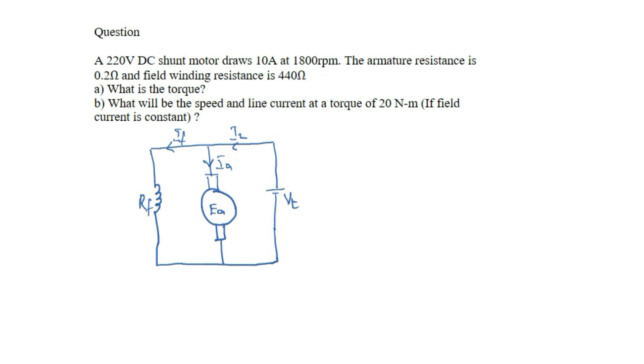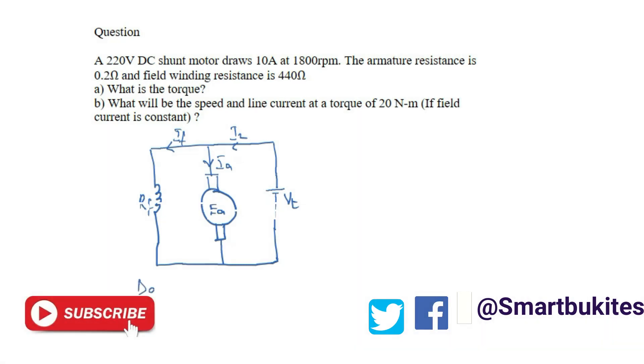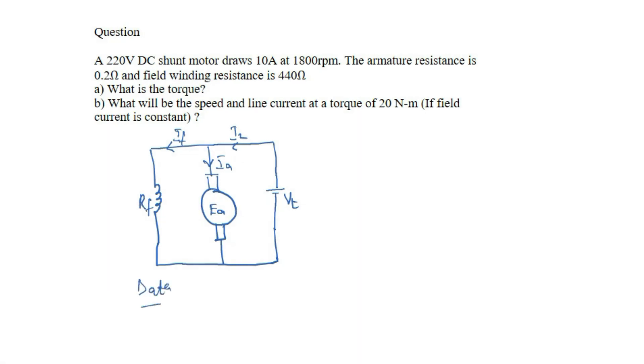A 220 volt DC shunt motor draws 10 ampere at 1800 rpm. Armature resistance is 0.2 ohms and field winding resistance is 440 ohms. Let's see the data we are given.